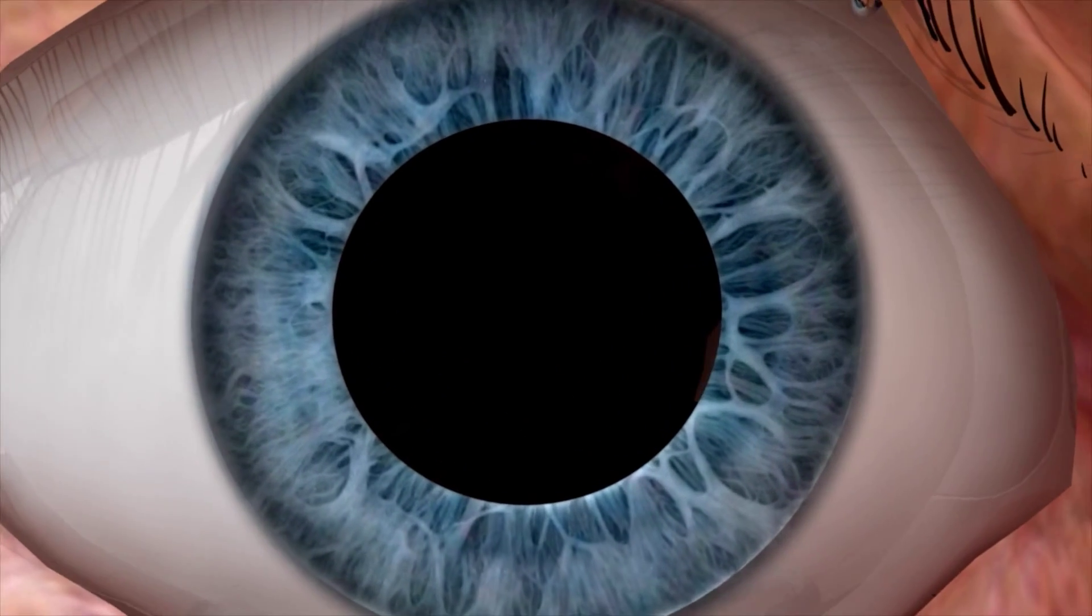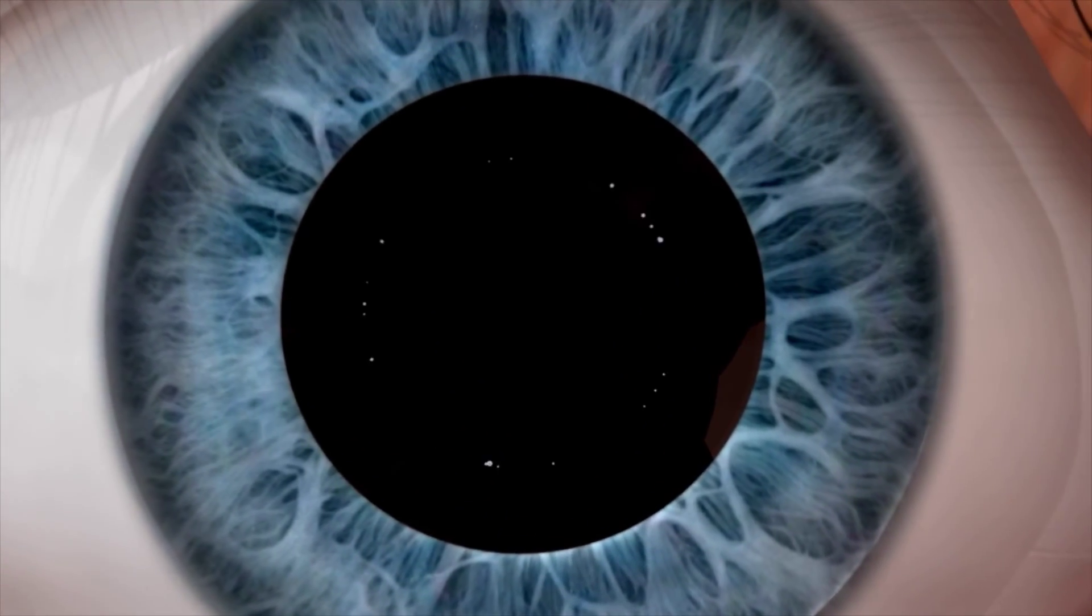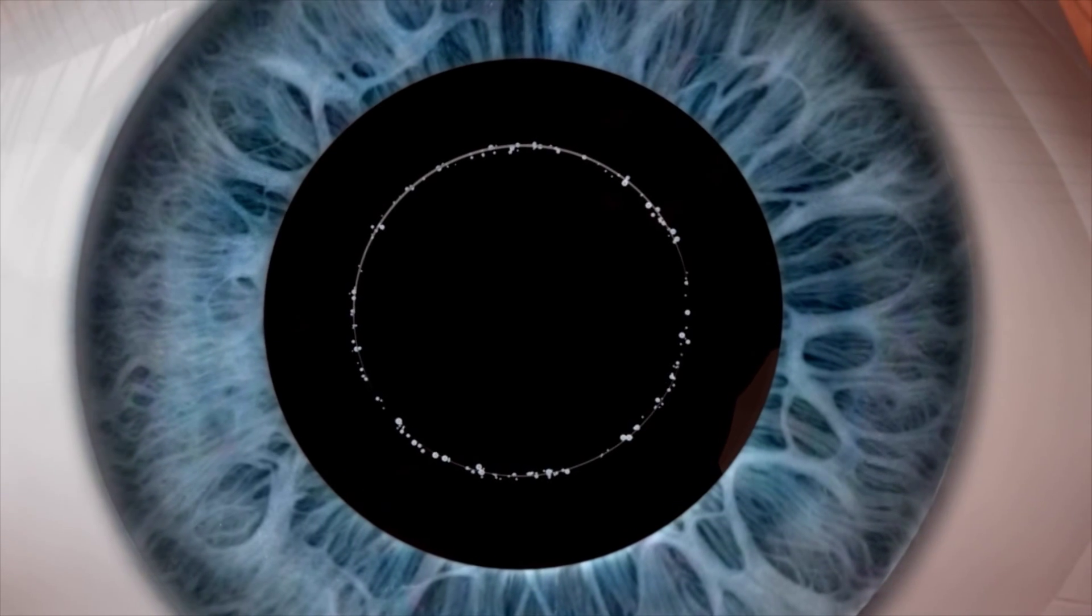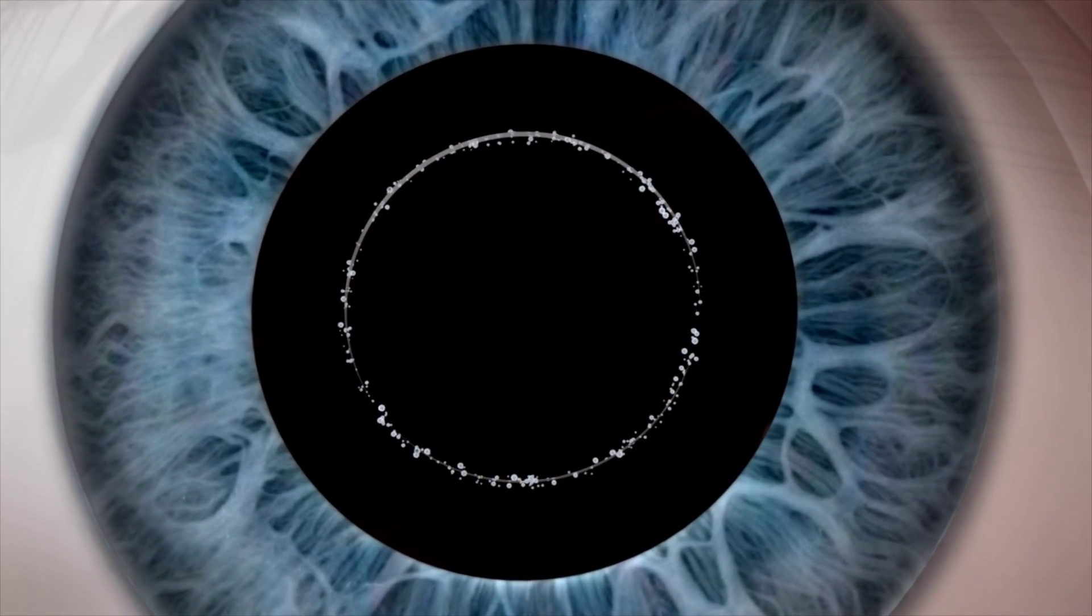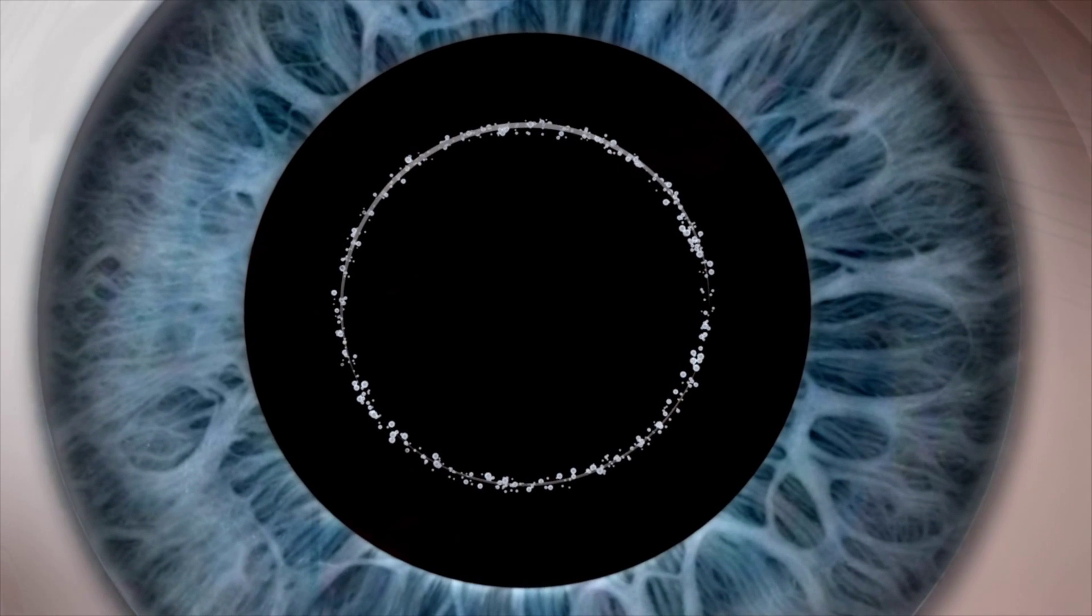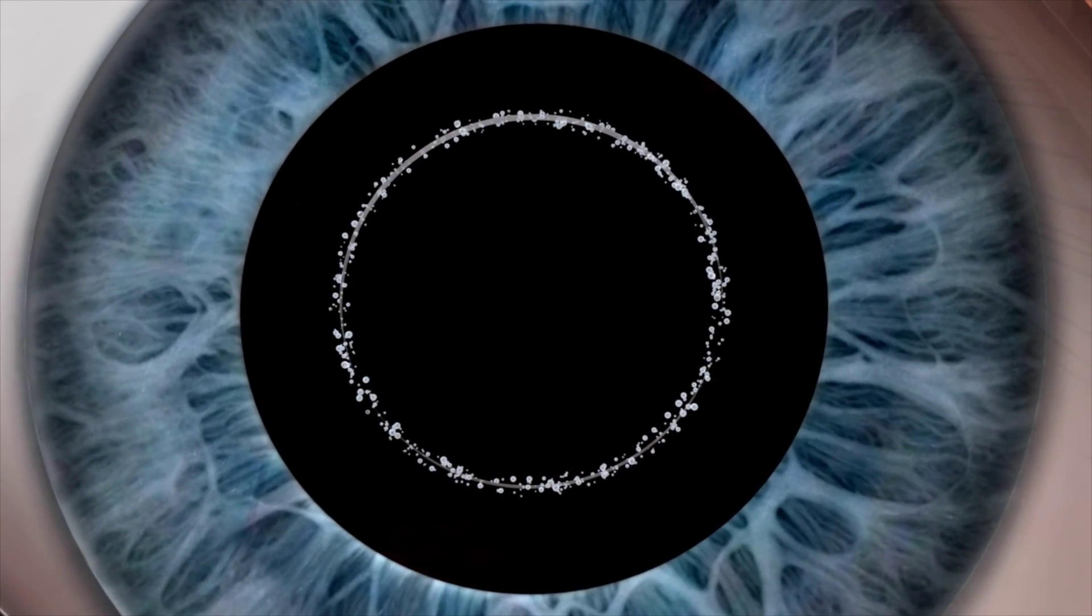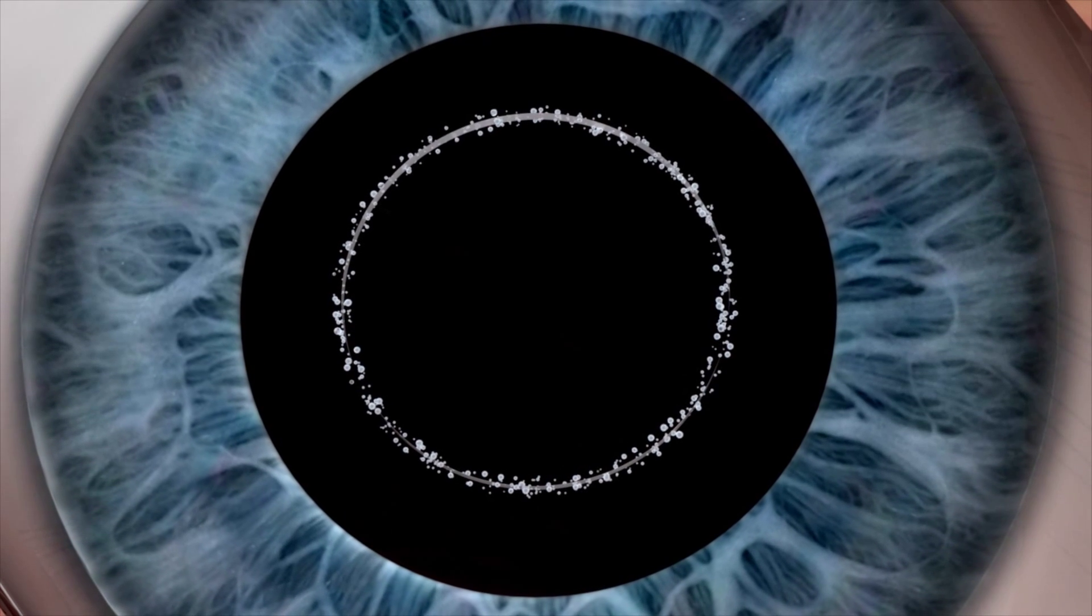First, the capsulotomy is performed, creating a precisely centered capsular axis. This is very important, as proper capsulotomy size has been shown to impact the effective lens position, a key parameter in IOL power calculations.